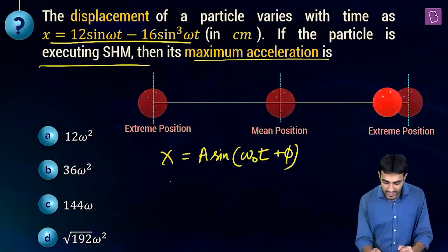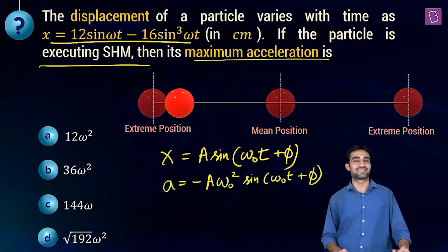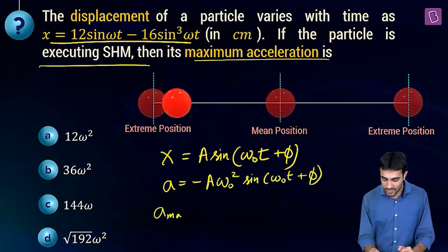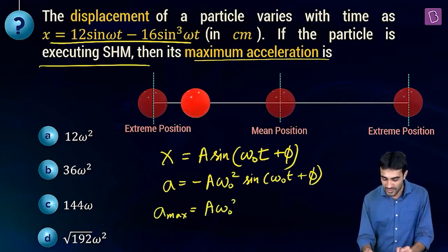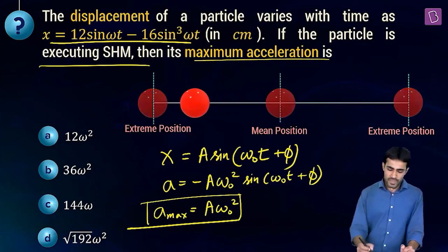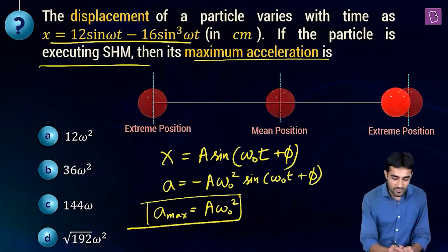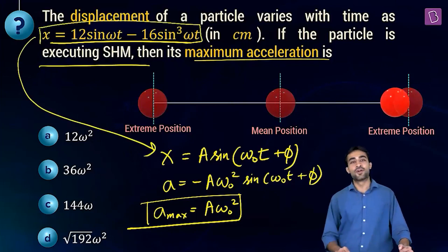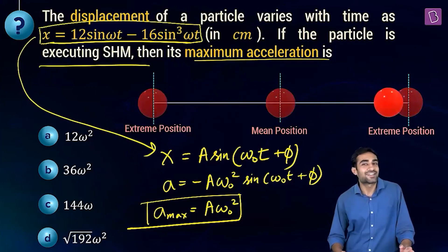For a particle in SHM with x = A·sin(ω₀t + φ), double differentiating gives acceleration = −A·ω₀²·sin(ω₀t + φ). The maximum magnitude of acceleration is A·ω₀², occurring at the extreme positions. However, our equation is not in this standard format — we must convert this equation into this beautiful format.